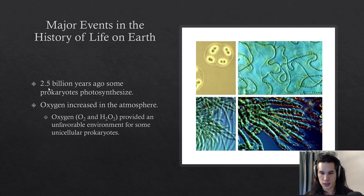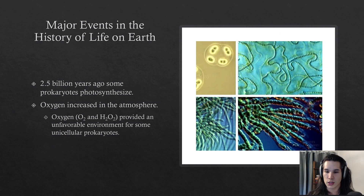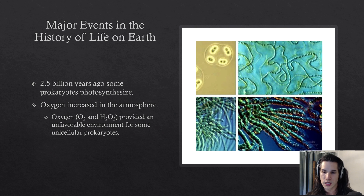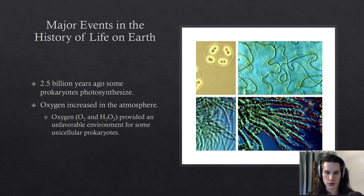Around 2.5 billion years ago, some prokaryotes developed the capacity to photosynthesize. A byproduct of photosynthesis is oxygen. Photosynthesis is a pretty cool trait — you don't have to eat other organisms to survive. You can simply use light energy from the sun, take in CO2 from the atmosphere, splice that together to make sugars, and consume those sugars for energy.